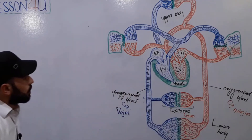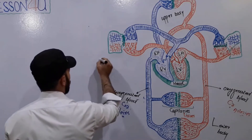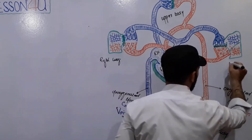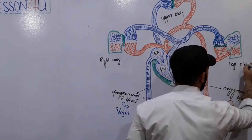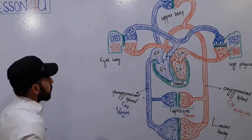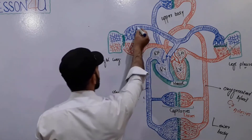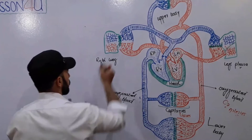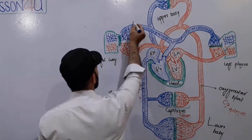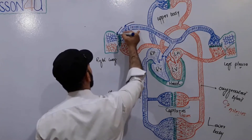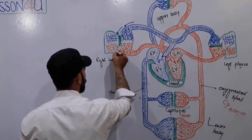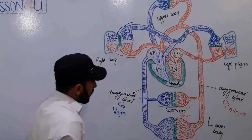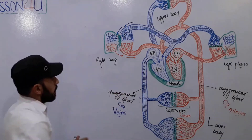This is our right lung and this is our left lung. What happens here is that the deoxygenated blood comes in, and it is oxygenated — the blood comes in and oxygenated blood goes back out. We will discuss the full flow of blood shortly.